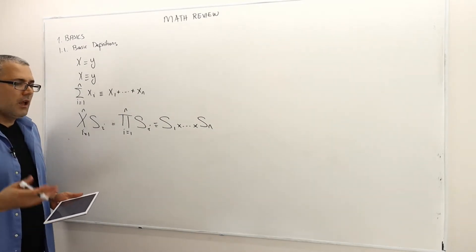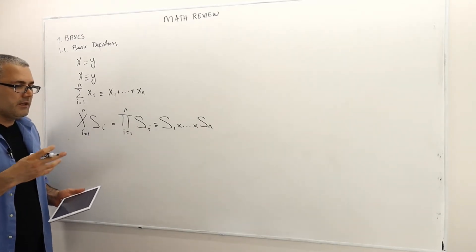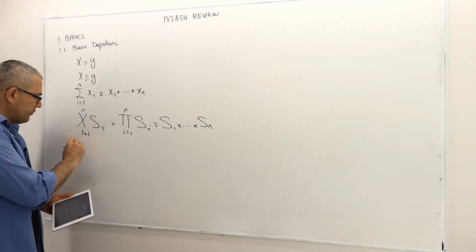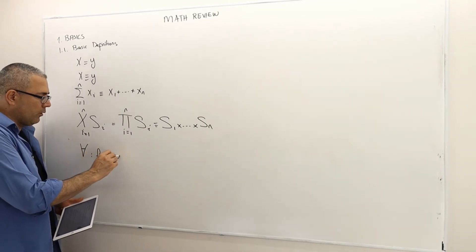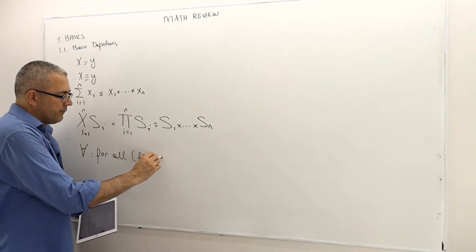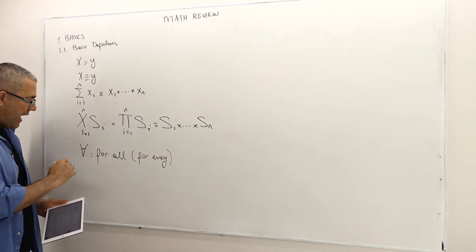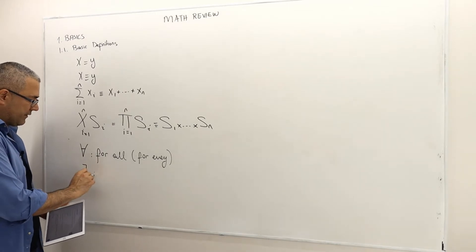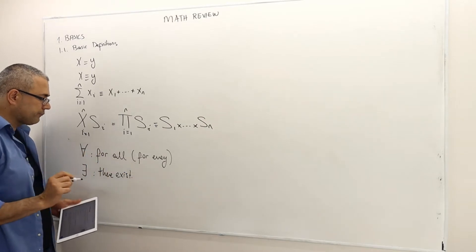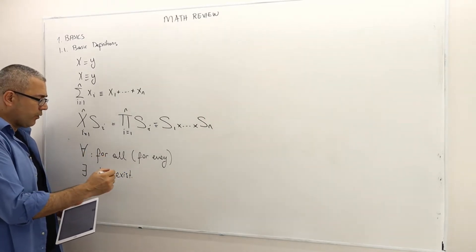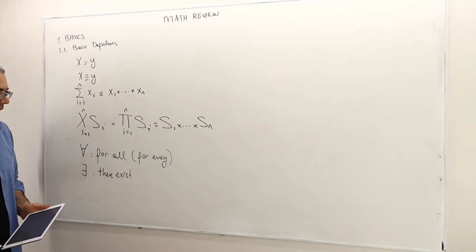In logic, we unfortunately didn't have enough time to talk about these, but in our advanced courses we are going to use those notations a lot. 'For all' — this is what it means — for all, sometimes 'for every'. And 'there exists'. So there exists and for all are two concepts that we often use.